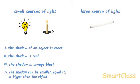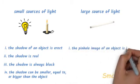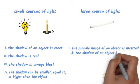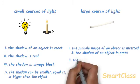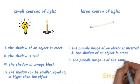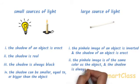The two important differences between the pinhole image and shadows are: the pinhole image of an object is inverted whereas the shadow of an object is erect. And the pinhole image of an object is of the same color as the object, but the shadow of an object is always black.